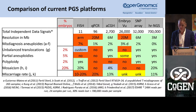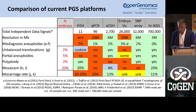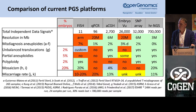This technique gives more resolution and is also cheaper than other techniques. It can detect all types of abnormalities. It's also useful for translocations because we get about a three-megabase resolution compared to other techniques — for instance, array CGH gives six megabases, quantitative PCR gives less, and another sequencing technique gives only about 20 megabases.